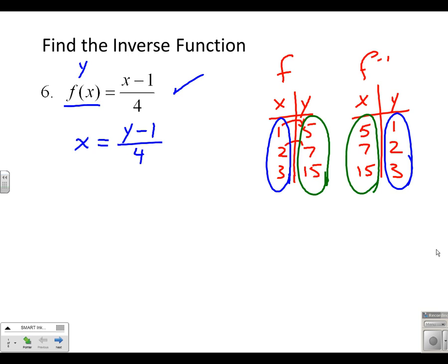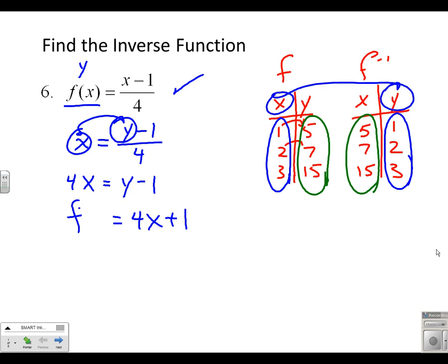becomes x equals (y-1)/4. That gets us started finding our inverse function. So I solve this for y. Four times x is y minus one, add one, and I get y equals 4x plus 1. That's what y is, but really I'm going to name that as our inverse function. Why is it our inverse function? Because I changed x's and y's, just like I changed x's and y's here.